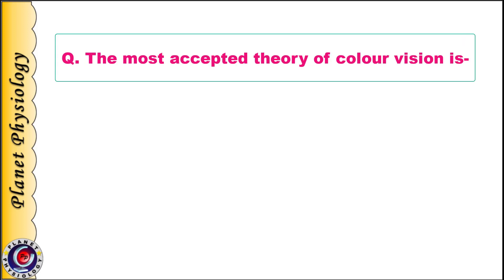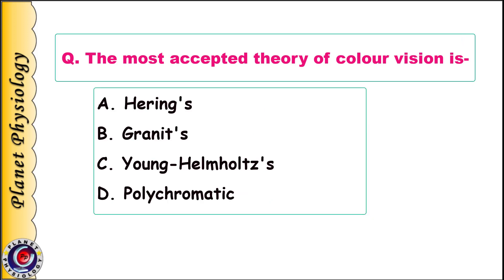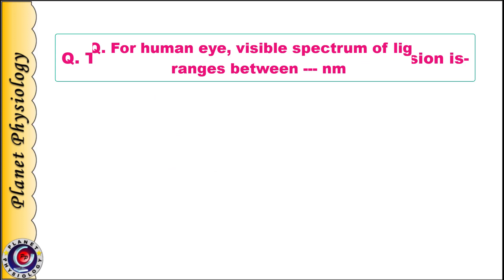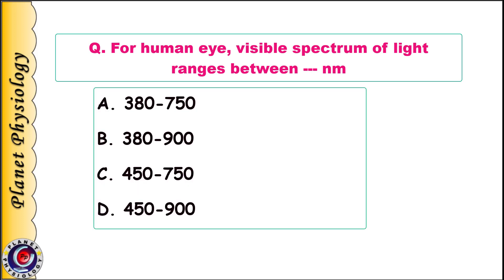The most accepted theory of color vision is: A. Hering's; B. Granit's; C. Young-Helmholtz; D. Polychromatic. For the human eye, the visible spectrum of light ranges between — nanometers: A. 380 to 750; B. 380 to 900; C. 450 to 750; D. 450 to 900.